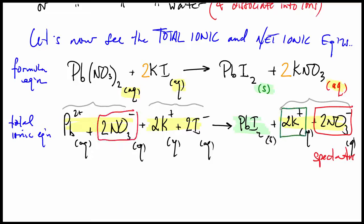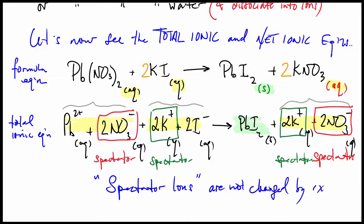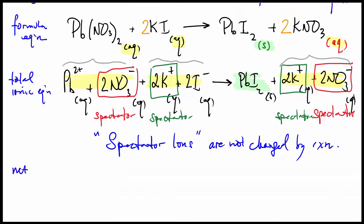The ones that are not changed, like these nitrates and these potassium ions, we call them spectators, because they enter the reaction and leave without undergoing any changes at all. They're really uninvolved in the reaction. They do have a purpose, just to bring their partners to the reaction. Nothing happens to them.